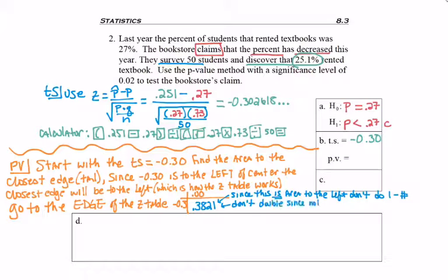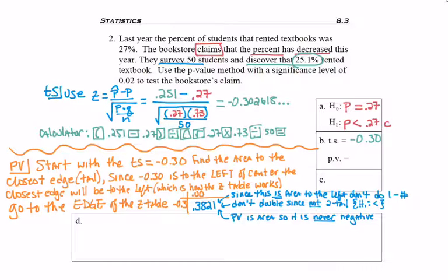I also do not double the table number since I do not have a two-tail test. Why is it not two-tail? The alternate hypothesis uses less than, so it's just a left-tail test. And lastly, p-value is area, so it's never negative. If I had a left-tail test critical value it would have to be negative, but even though this is a left-tail test, the p-value is area and is never negative.